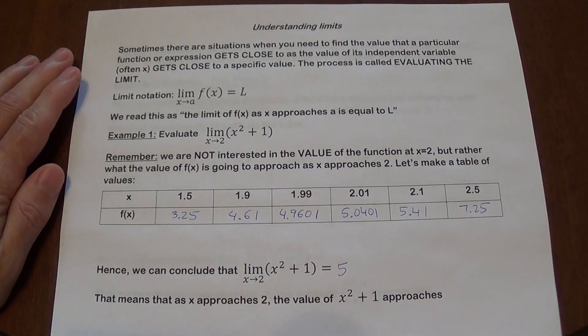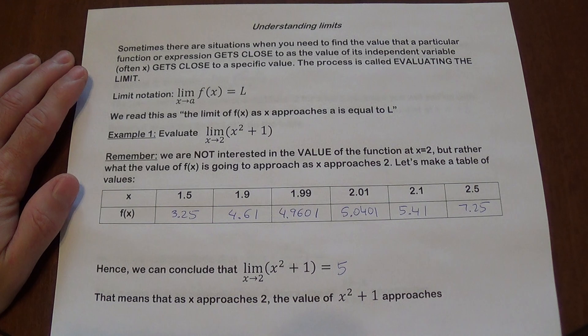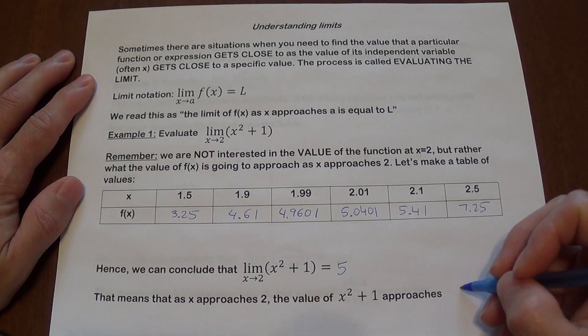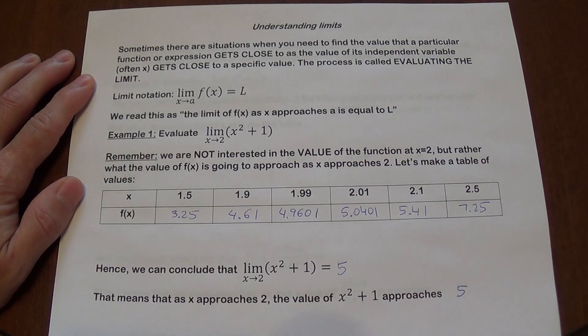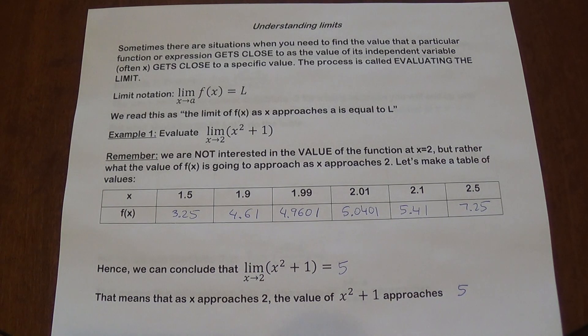In other words, we can say that as x approaches 2, the value of x squared plus 1 approaches 5. So this is the concept of that again.